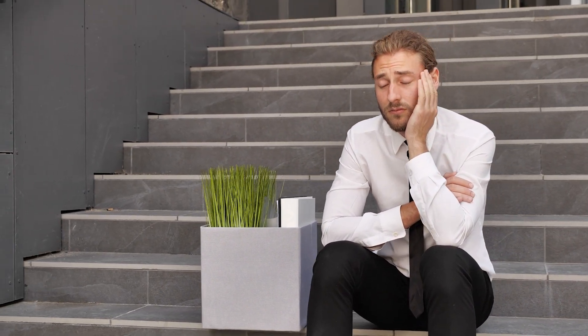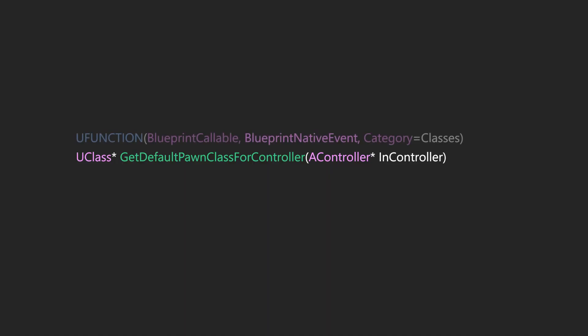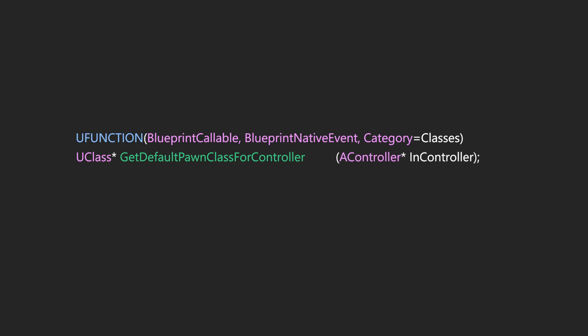In this function we can see that the Unreal Engine reflection system is being used - there's a uFunction call being passed some parameters. One parameter is very interesting to us: blueprint native event, which means this function can be overridden by a blueprint and has a default native implementation. This is designed to be overridden in blueprints, which means we can override it as well. When that happens, you have to look for an underscore implementation suffix. So we'll override a function called getDefaultPawnClassForController_Implementation. Let's head over to the CPP file and take a look at what this function actually does.